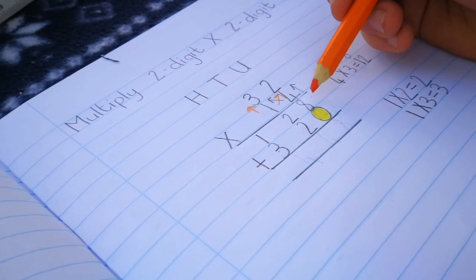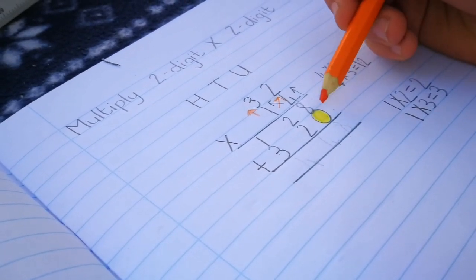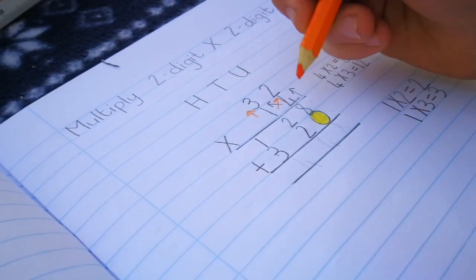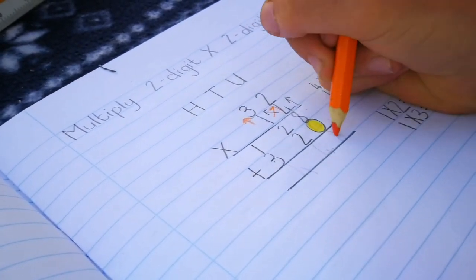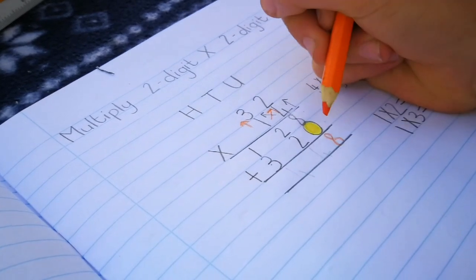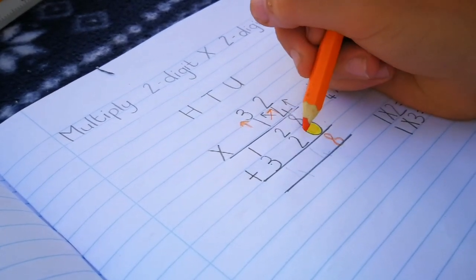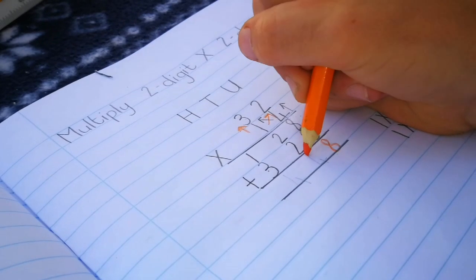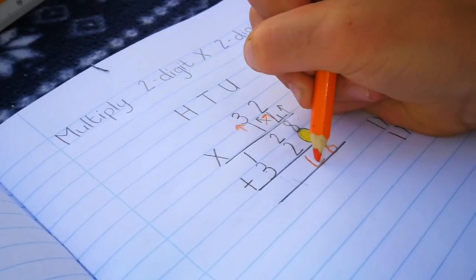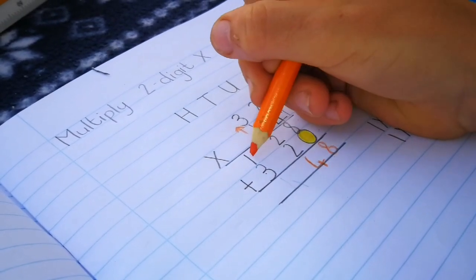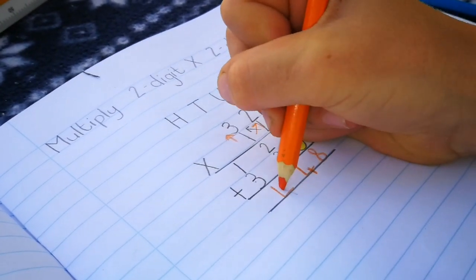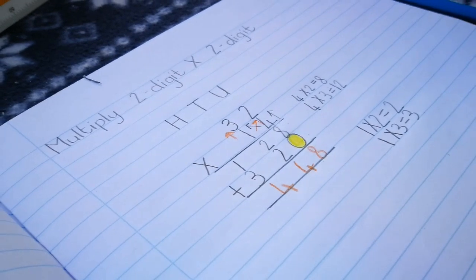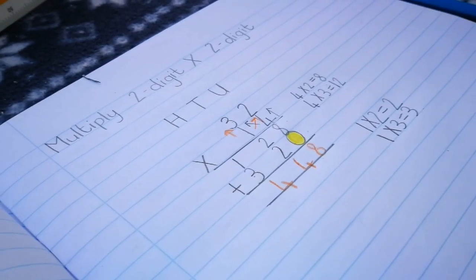The final challenge. We are going to plus these 2 answers. 8 plus 0 is 8. 2 plus 2 equals 4. 1 plus 3 equals 4. So 32 times 14 equals 448.